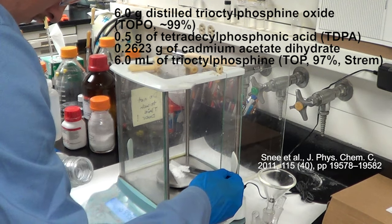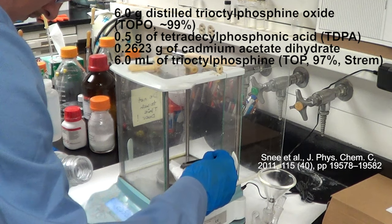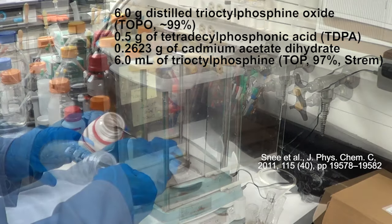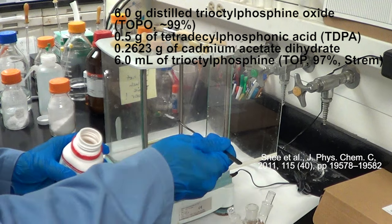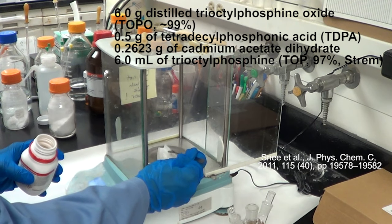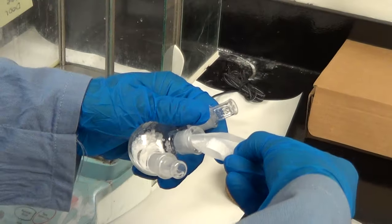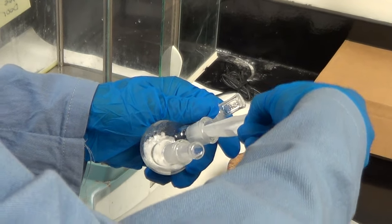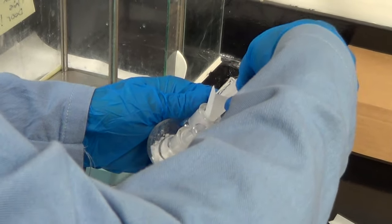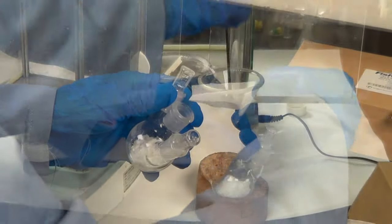We're also adding half a gram of tetradecyl phosphonic acid. We actually have a video showing you how to prepare that material, or it is also commercially available. And we are also weighing out some cadmium acetate dihydrate that gets added to this 50 mL round bottom flask. The next thing is we are going to tie that into the Schlenk line and degas it.